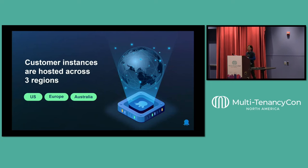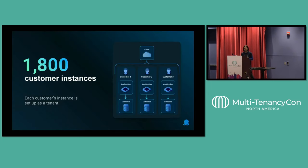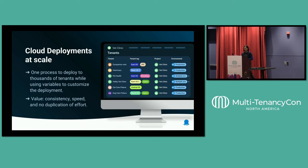We host customer instances across three regions — US, Europe, and Australia — and those 1,800 customer instances are set up as tenants, so each customer instance is set up as a tenant. The biggest benefit of setting them up as tenants is that we can follow a single deployment process and use variables to customize those deployments. We use tenant tags to define specific customer groups.